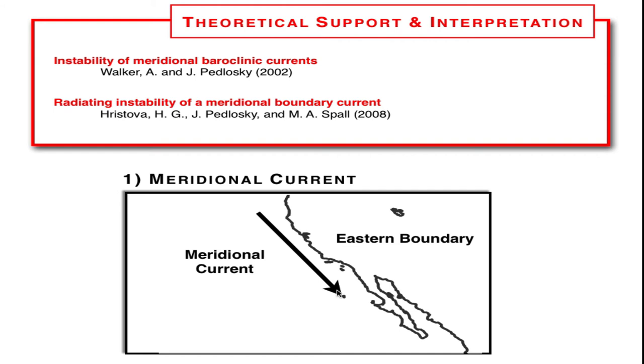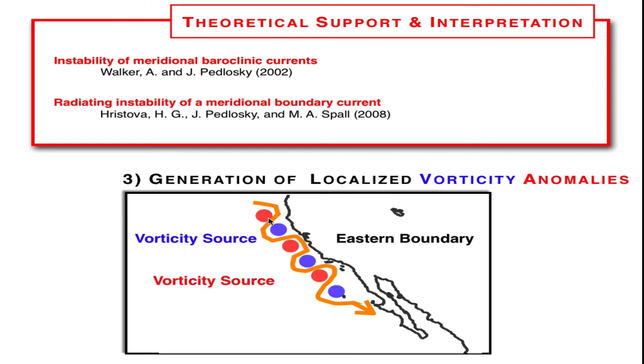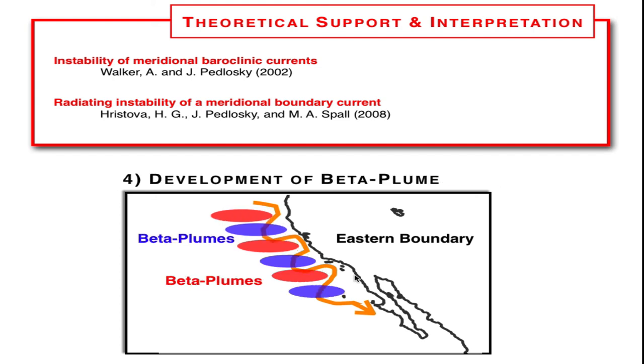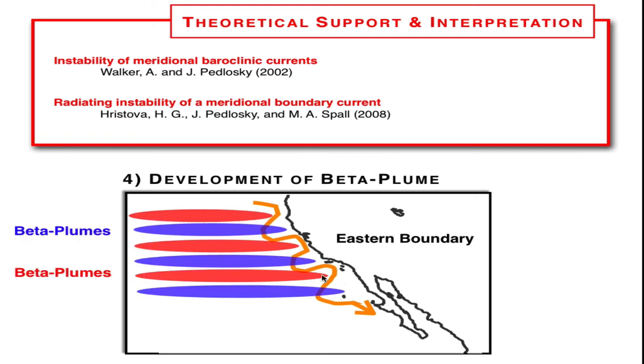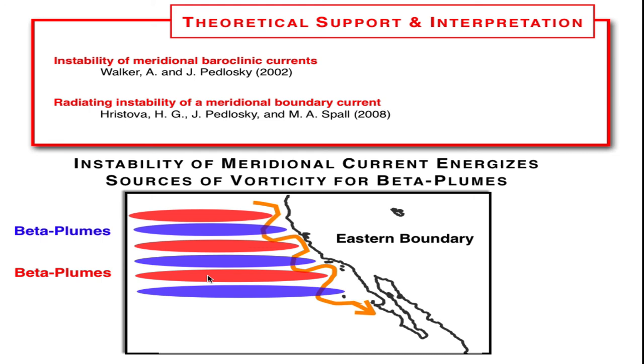To summarize, we have a meridional current like the eastern boundary here in the North Pacific. This meridional current is unstable. These instabilities produce vorticity anomalies that, for the particular case of a realistic geometry like this, these vorticity sources get anchored or localized in space along the coast where the capes are. And as such then, once you anchor or localize these vorticity sources, then the beta drift dynamic can elongate these vorticity sources into beta plumes that eventually fill the domain. This interpretation of an instability of the meridional current that energizes the sources of vorticity for beta plume seemed to be the most consistent with the numerical result and supported also by some of the theoretical work that has been done previously.